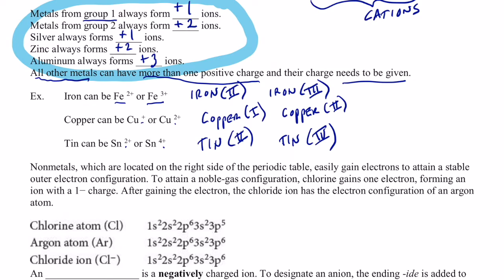Non-metals which are located on the right side of the periodic table easily gain electrons. You should know why after our last unit on periodic properties. Remember when you go to the right, doesn't the atomic radius decrease? So it's easier for those atoms that are smaller to gain negative electrons. So they gain electrons to attain stable outer configurations. To attain a noble gas configuration, chlorine gains one electron, forming an ion with a negative one charge.